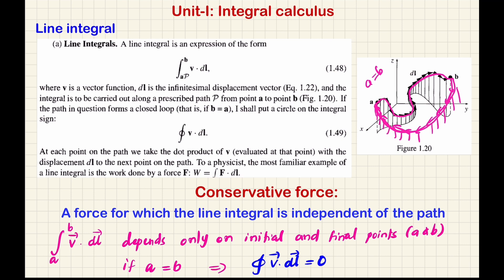This is the closed line integral of the vector function v. In this line integral, we have the example of work done. Work done is equal to F·s. In case of a curved path displacement, work done is equal to the integral of F·dl, where F is the force acting on the system and dl is the infinitesimal displacement vector.